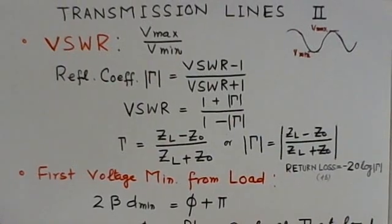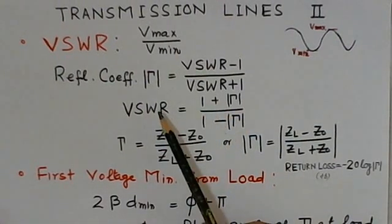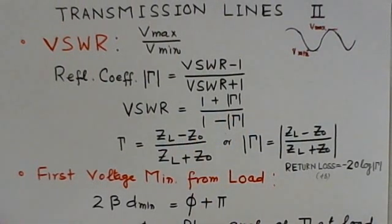Now, the VSWR only gives the magnitude of reflection coefficient. Suppose we wish to find the impedance of a load, then we also need the phase part of it, not only magnitude.